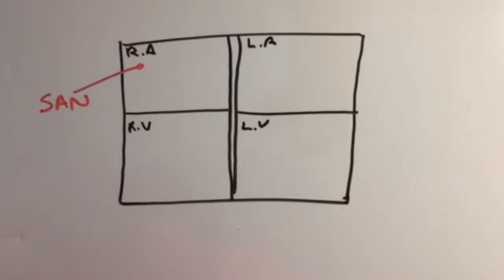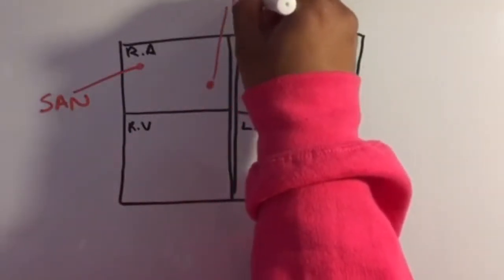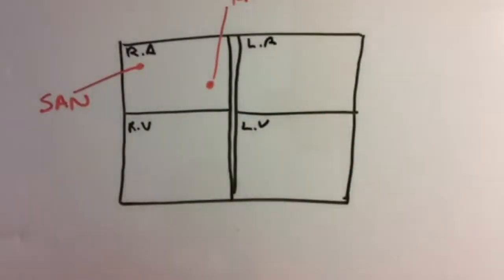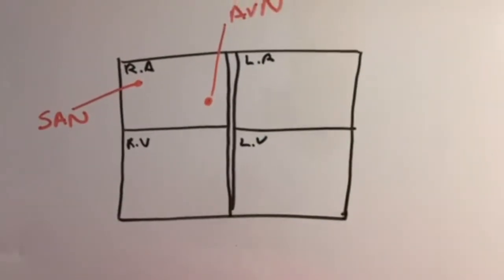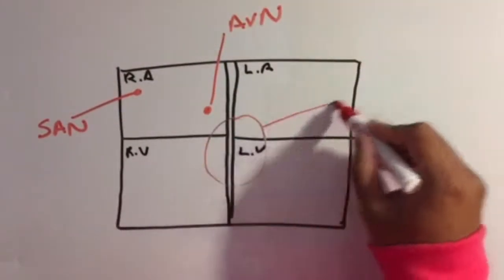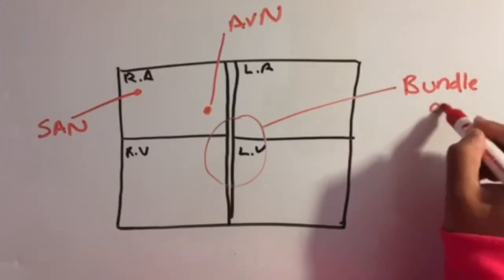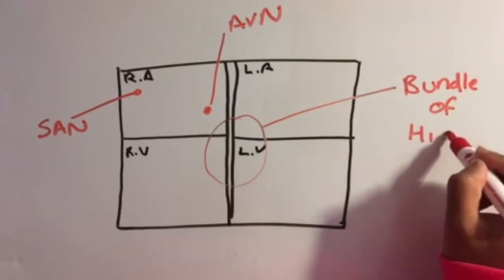It sets the rhythm of the heartbeat by sending out regular waves of electrical activity. This allows the right and left atria to contract at the same time.